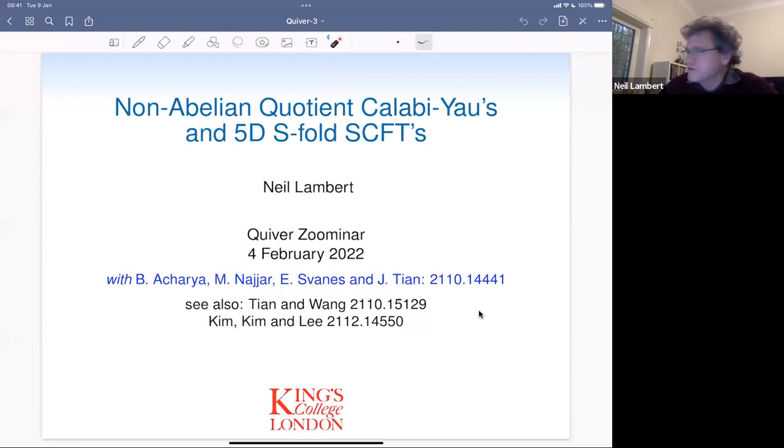So I hope that I still have something to share. This is indeed a project that came out, I guess last October, November, with these collaborators of Bhavya Charya, Marwan Naya, Eric Svanes, and Jiha Tian. And I want to highlight here two other papers which have appeared since, one by Jiha Tian and his collaborator Wang, and I think actually he spoke about this on this journal club meeting a few weeks ago. And then there's also another paper which developed what we were talking about by the Korean group.